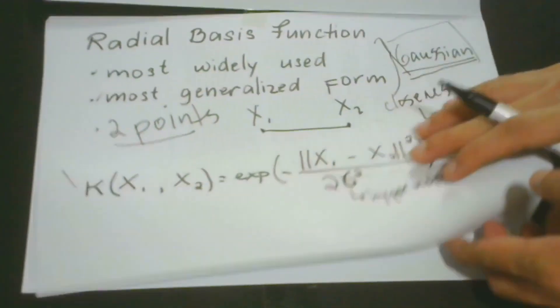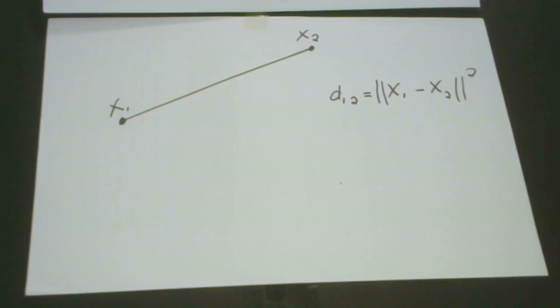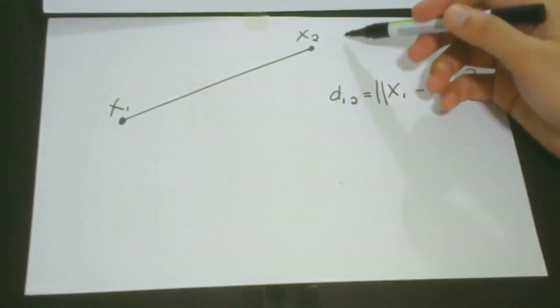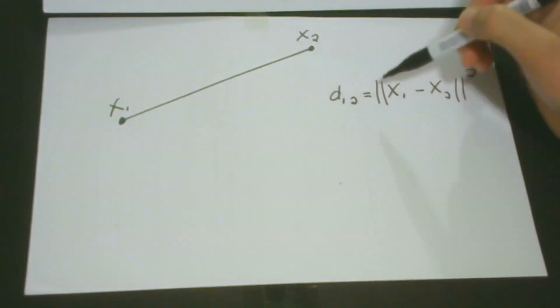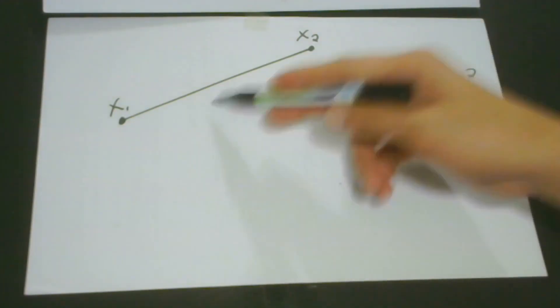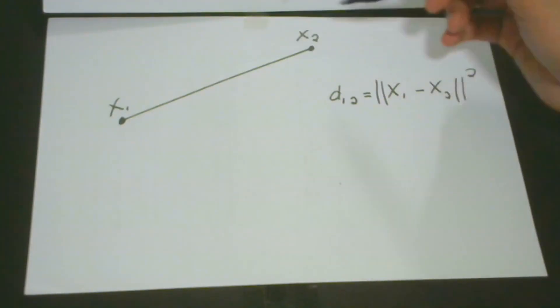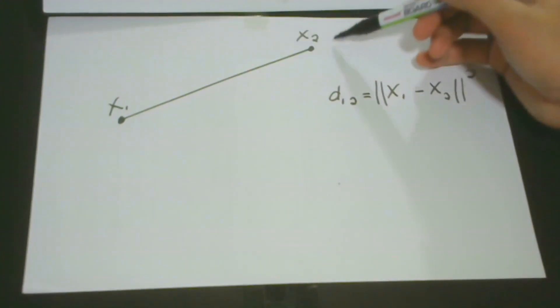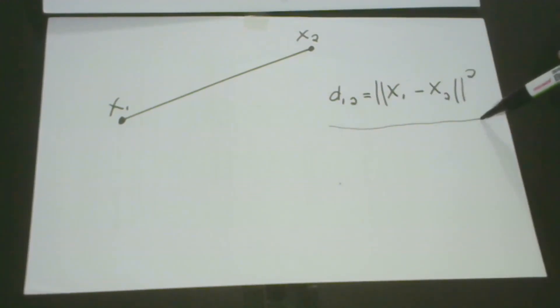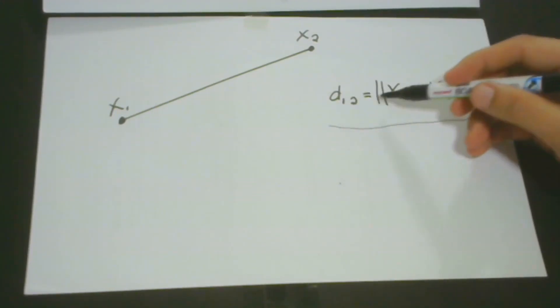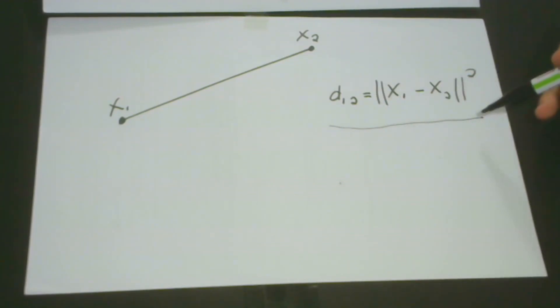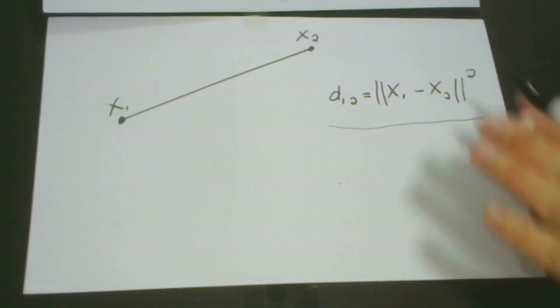So for better understanding, let's have this example. So we have here point x1 and x2. So we're going to have the d1,2 where d1,2 has a distance between x1 and x2. So the distance between these two points can be represented using this mathematical formulation: d1,2 is equal to the absolute values of x1 minus x2 squared. So as you could see here, we are actually getting the absolute values because we are talking here of distance.